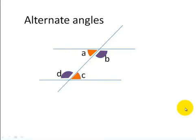There are another two pairs of alternate angles here: angle A and angle C are alternate angles, and angle B and angle D are alternate angles.